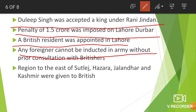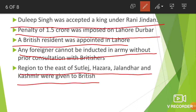The region to the east of the Sutlej River in Punjab — the regions of Hazara, Jalandhar, and Kashmir — were given to the Britishers. Kashmir was later sold to Maharaja Gulab Singh, who was the ruler of Jammu. In that way, Kashmir was separated from the Sikh Empire. Earlier, Kashmir had been a part of the Sikh Empire. These were the key points and outputs of the Treaty of Lahore.